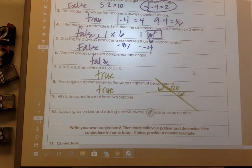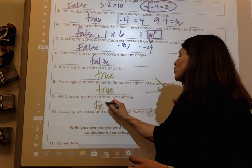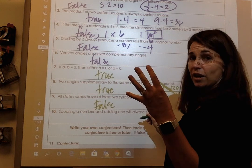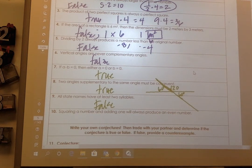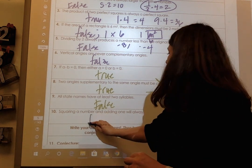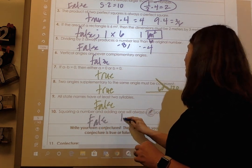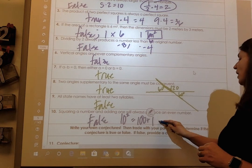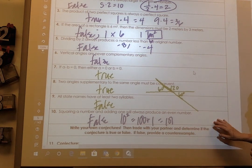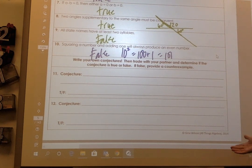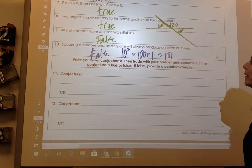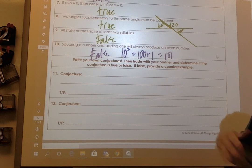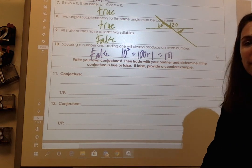Number nine: all state names have two syllables? No. False. I'm sure you can think of more. California has four. Maine has one. New Hampshire. So tons of counterexamples there. Number 10: squaring a number and adding one will always produce an even number. Well, that's not true. What about if I square 10? 10 squared is 100 plus 1, 101 is not even. So that is false there. So here you can write your own conjectures and then trade with your partner, but you're watching this by yourself, so we won't do that part. But you could come up with your own there. And we're going to stop this first video.